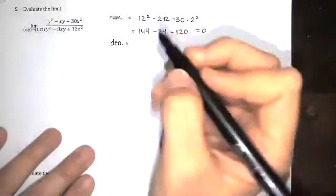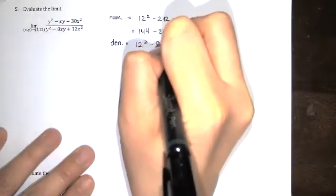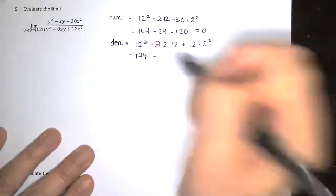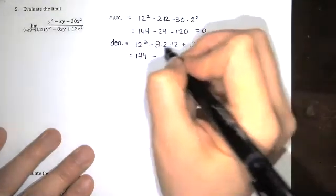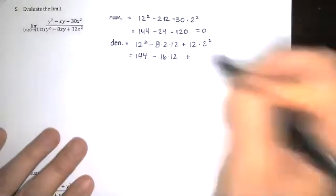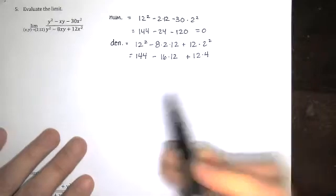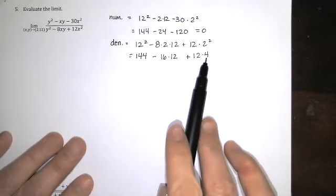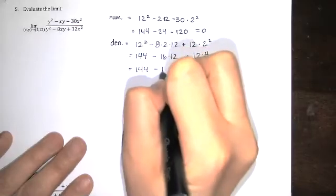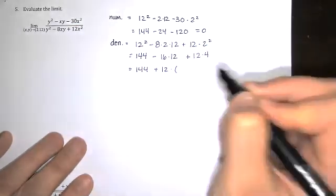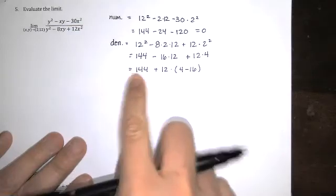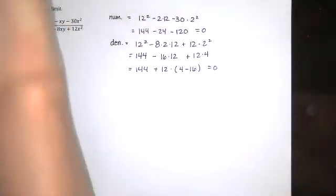And the denominator at x equals 2, y equals 12 is 12 squared minus 8 times 2 times 12 plus 12 times 2 squared. So we end up with 144 minus 16 times 12. I can just do 12 times 4 minus 16 times 12. I'll factor out the 12. It's going to be 144 minus 144 will be 0. So this is a 0 over 0 indeterminate form.